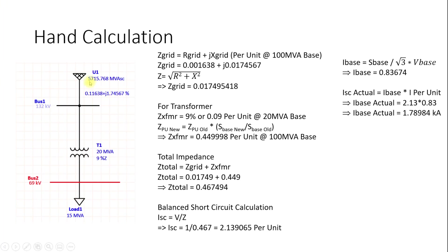We have a basic power grid with a short circuit capacity of 5715 MVA and impedances of 0.116% and 1.74%. We have a 20 MVA transformer with an impedance of 9% at 20 MVA connected to a load of 15 MVA. To calculate the short circuit at this 69 kV bus, we calculate the total impedance of the power grid and the transformer, then use I = V/Z.